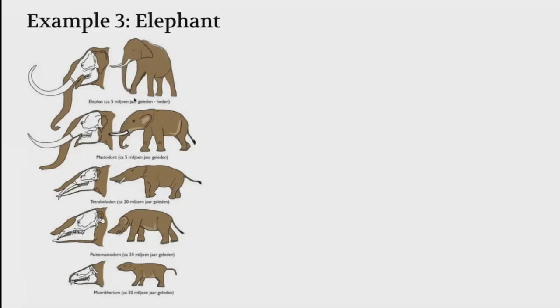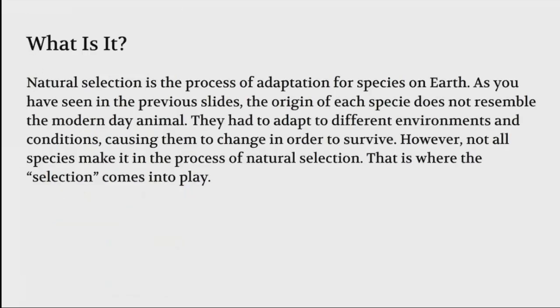Natural selection. What is it? Natural selection is the process of adaptation for species on Earth. As you've seen in the previous slides, the origin of each species does not resemble the modern day animal. They had to adapt to different environments and conditions, causing them to change in order to survive. However, not all species make it in the process of natural selection, and that's where the selection comes into play.